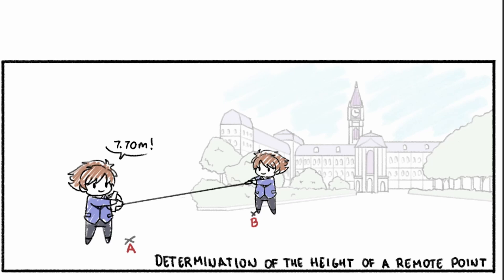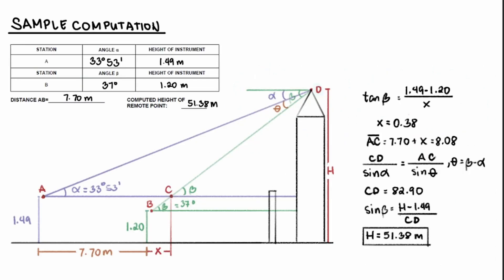Finally, combine all of the data gathered in order to determine the height of the remote point. So, the figure drawn shows the data gathered and their relationship to each other. This is the tower. This is the leveling rod. And these are the positions of your theodolite.